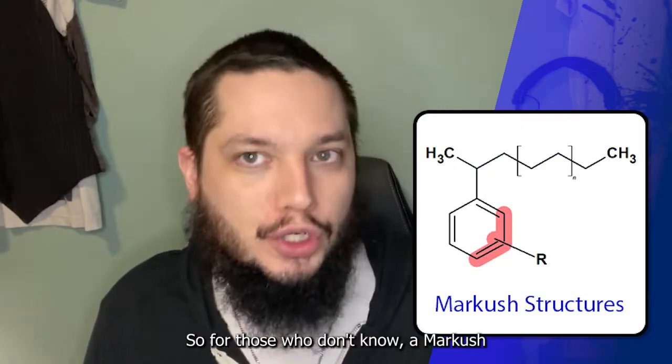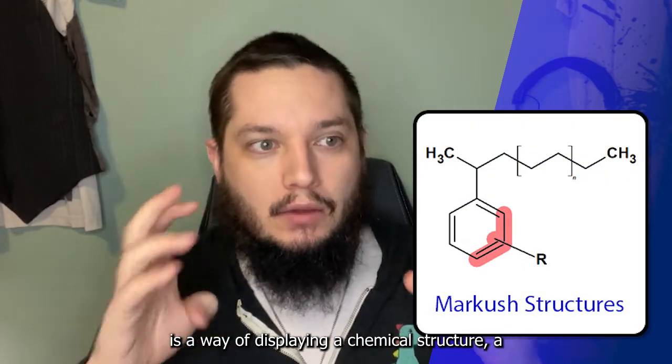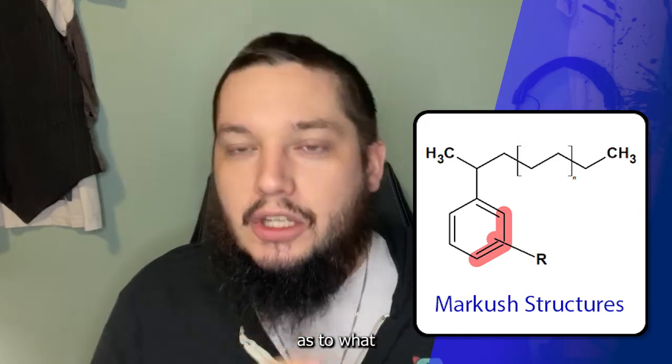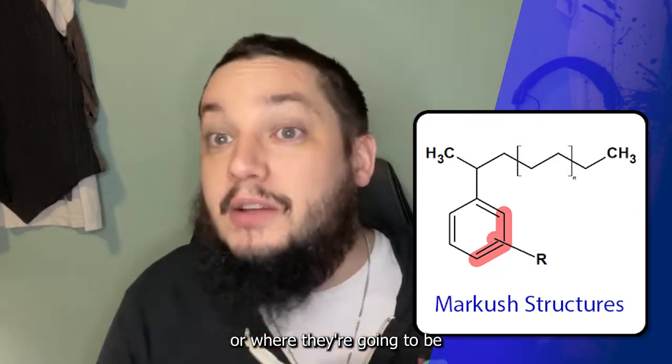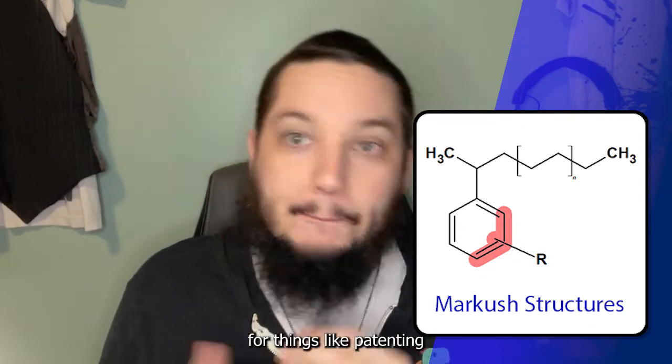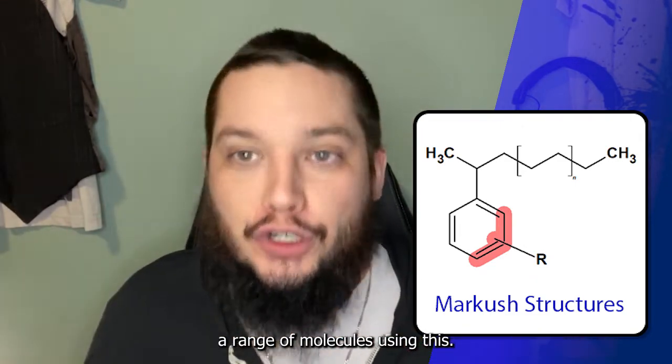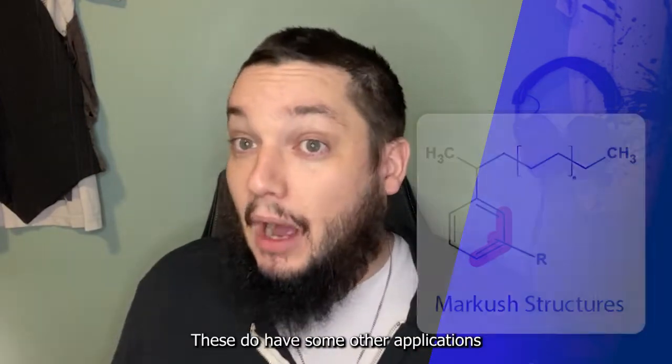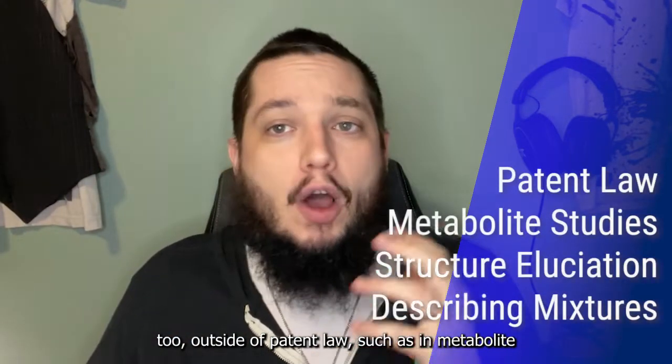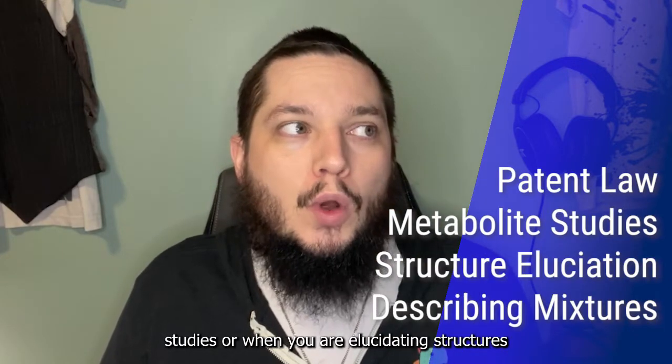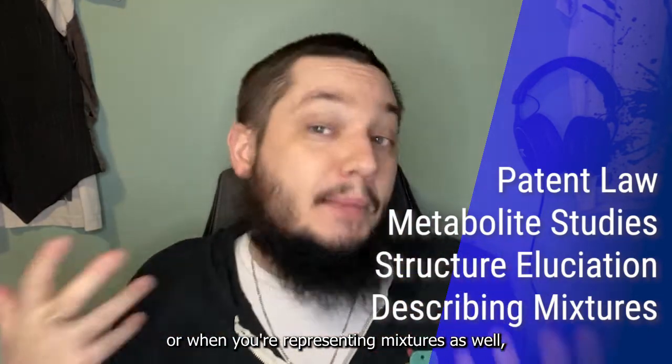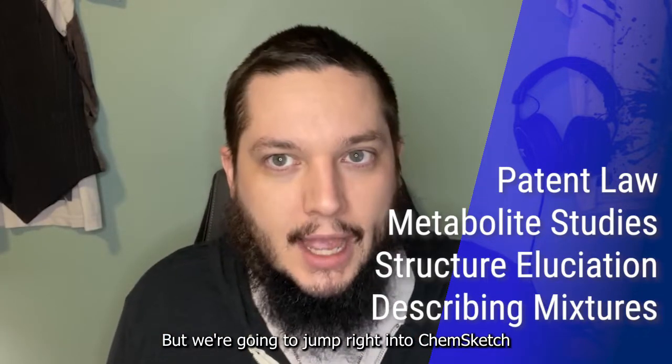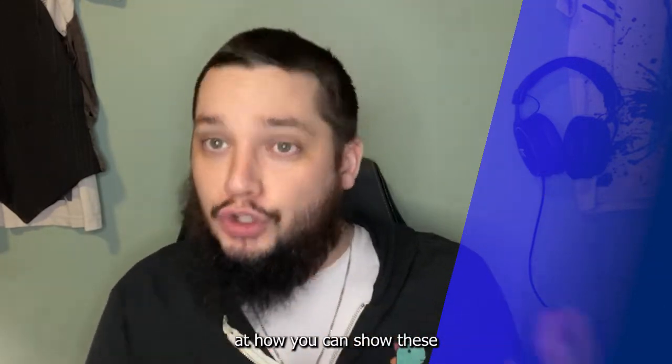So for those who don't know, a Markush structure is a way of displaying a chemical structure, an organic chemical structure that has some ambiguity in it because either you want some flexibility as to what the different groups could be or where they're going to be within the structure. This is particularly useful for things like patenting. If you want to be able to patent a range of molecules, this is a way to cover all of them or at least a range of them. These do have some other applications too outside of patent law, such as in metabolite studies, when you're elucidating structures, or when you're representing mixtures as well, when there's a range of different positions in a complex mixture for whatever reason. But we're going to jump right into ChemSketch and take a look at how you can show these and what they look like.